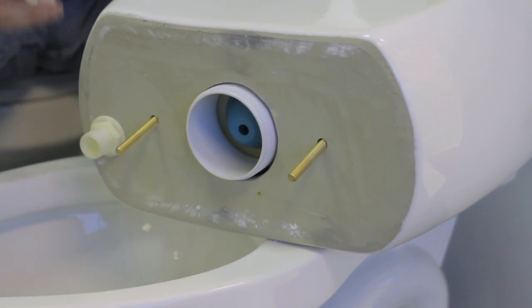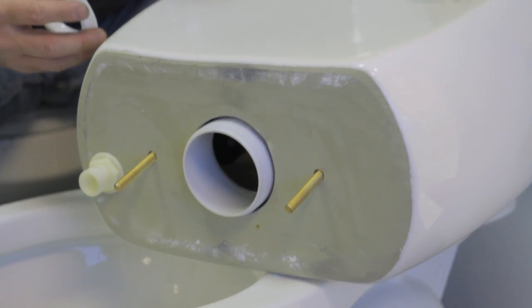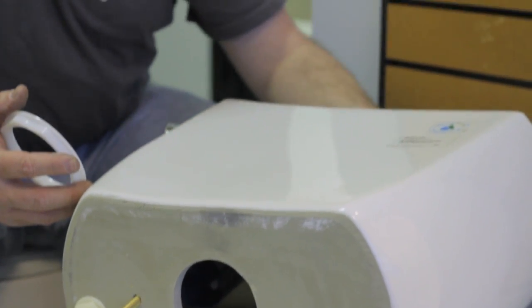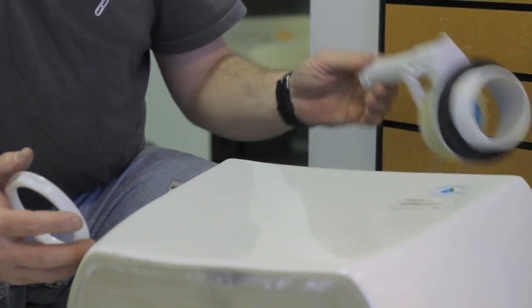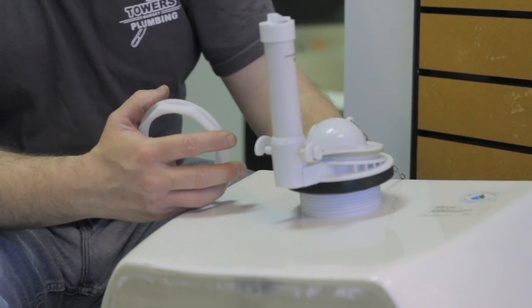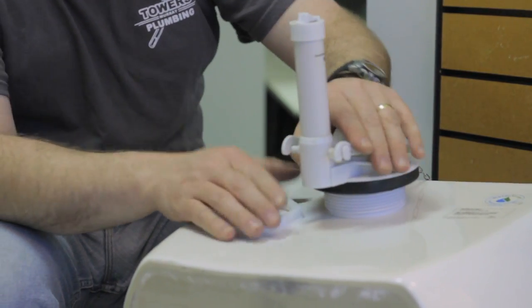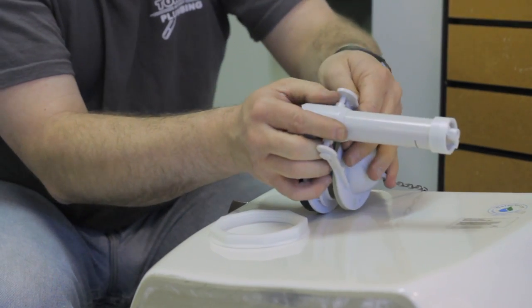Once you remove the lock nut, the flush valve or pipe joint will pull out from the top side. You'll have to disconnect the flapper from that flush valve.